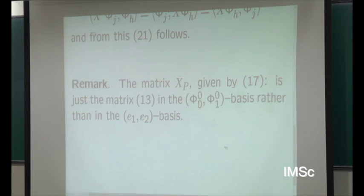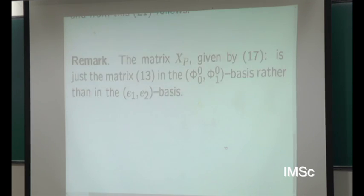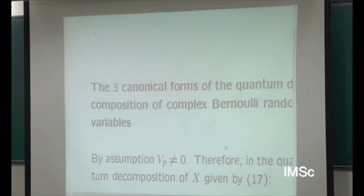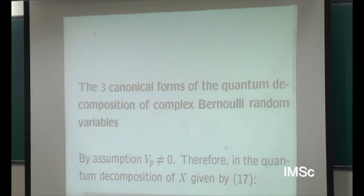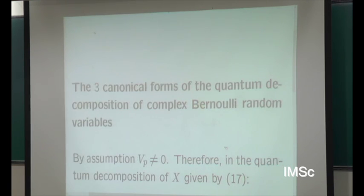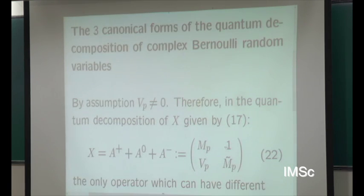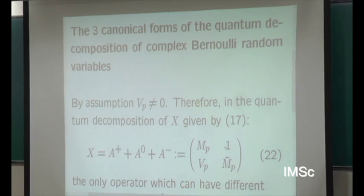These objects are important because they are the building blocks for limit theorems. The limit theorems will be in two stages: the first stage is analogous to classical probability, giving limit theorems for random variables. In the second stage, the functional central limit theorem introduces continuous time.